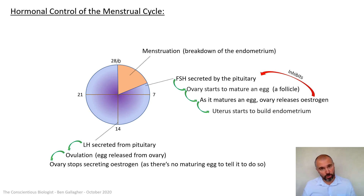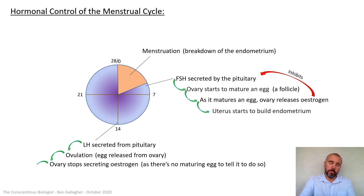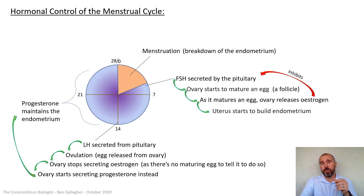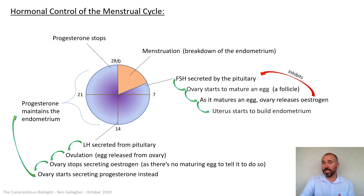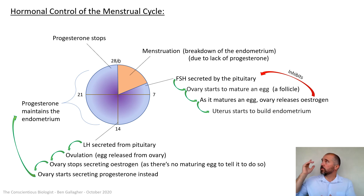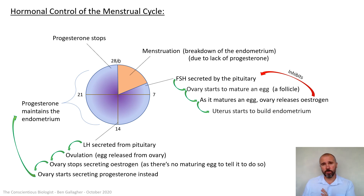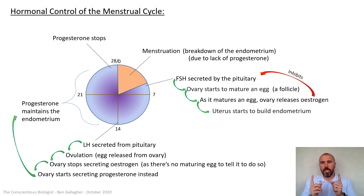Because the egg has been released, the ovary stops secreting estrogen as there's no maturing egg in it anymore. So the ovary starts producing progesterone, and progesterone maintains the endometrium through the second half of the menstrual cycle right up until about day 27. When progesterone stops, the endometrium breaks down and we get menstruation again, completing the cycle. The really important part of this whole cycle for decreasing fertility is that estrogen inhibits FSH.